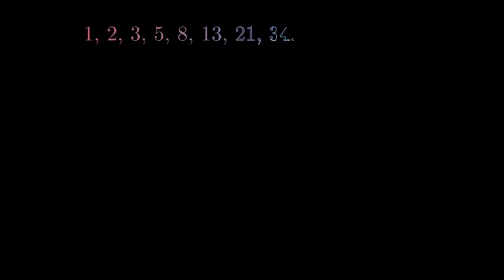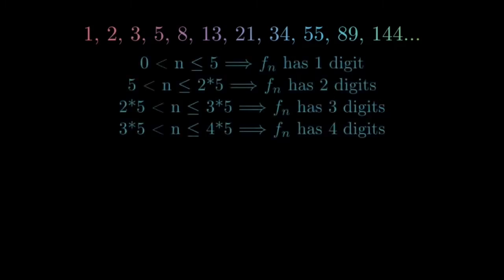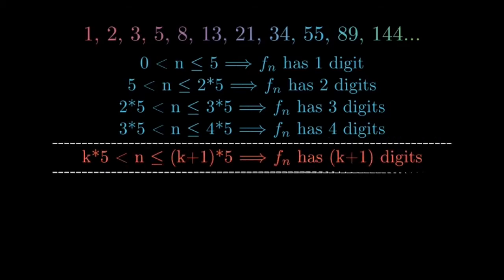This leads to the fact that f_{n+5} has at least one more decimal digit than f_n. From the Fibonacci sequence, we can see that the first 5 Fibonacci numbers have a single digit. From the previous result, we can see that the next 5 Fibonacci numbers have at least 2 digits, the next 5 have at least 3 digits, and the next 5 have at least 4 digits. Continuing so on, we have for n greater than or equal to 5k and less than or equal to 5 times (k+1), f_n has at least k plus 1 digits.